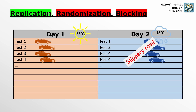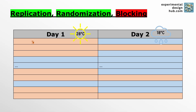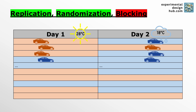So to deal with the weather issue, Louise could mix up the tests. So instead of testing all of tire A on one day and all of tire B on another, she'd alternate them across both days. This would make it much more likely that both tires get tested under similar weather conditions, and it's a much better approach.